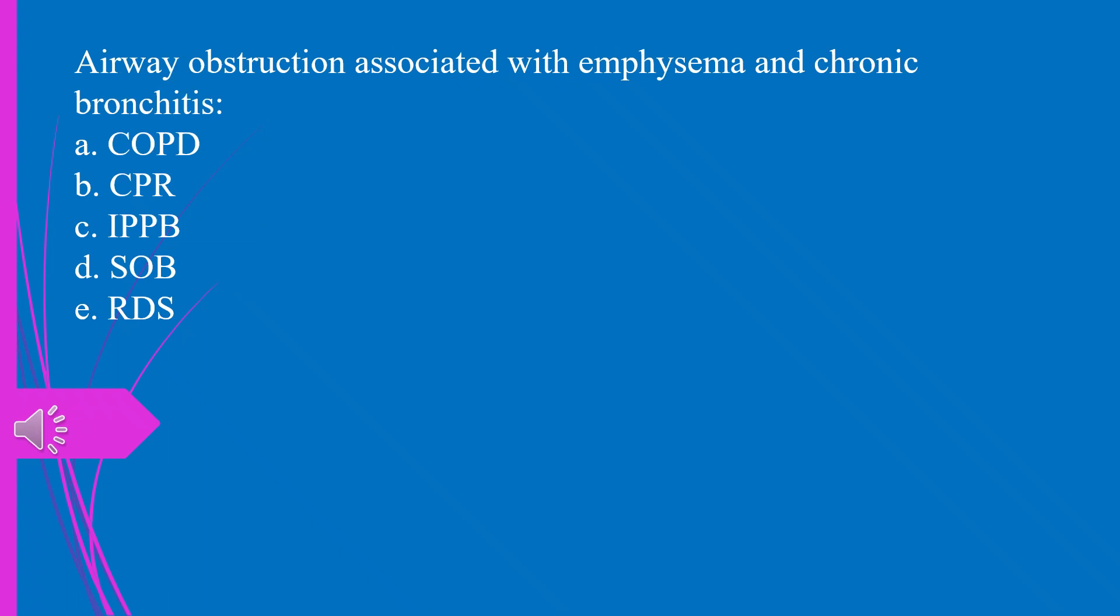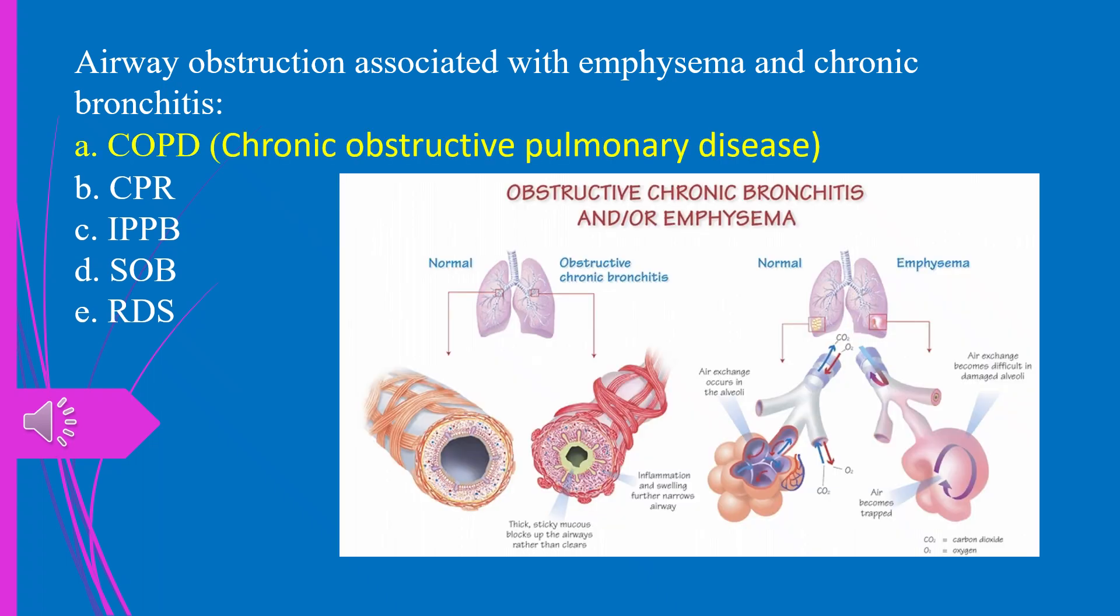Airway obstruction associated with emphysema and chronic bronchitis. A. COPD. B. CPR. C. IPPB. D. SOB, Shortness of breath. E. RDS. The answer is A. COPD. Chronic obstructive pulmonary disease.